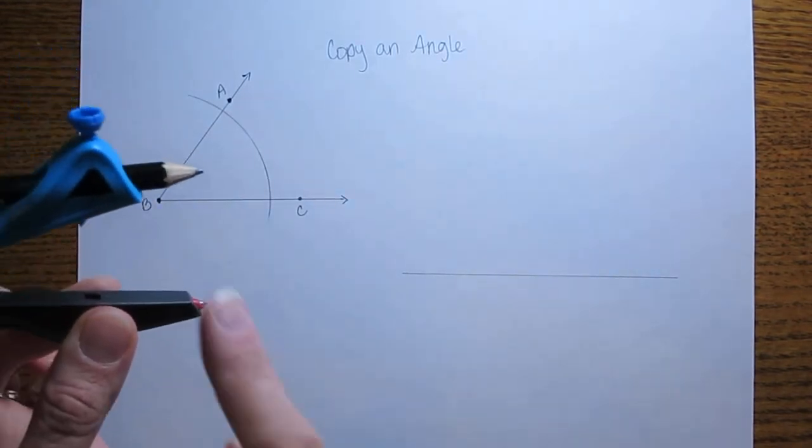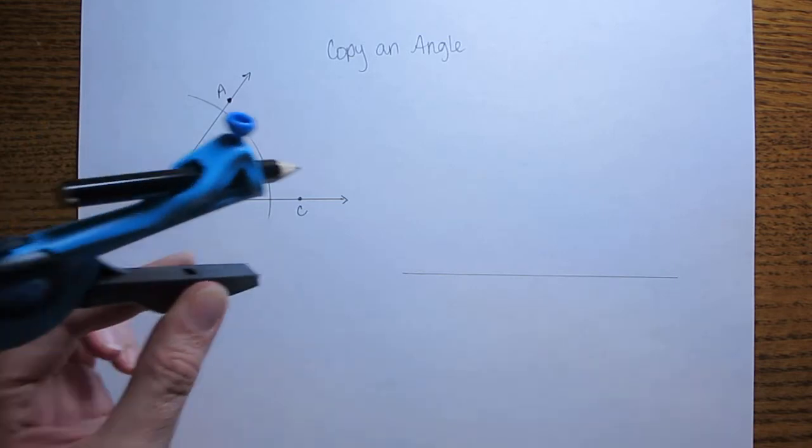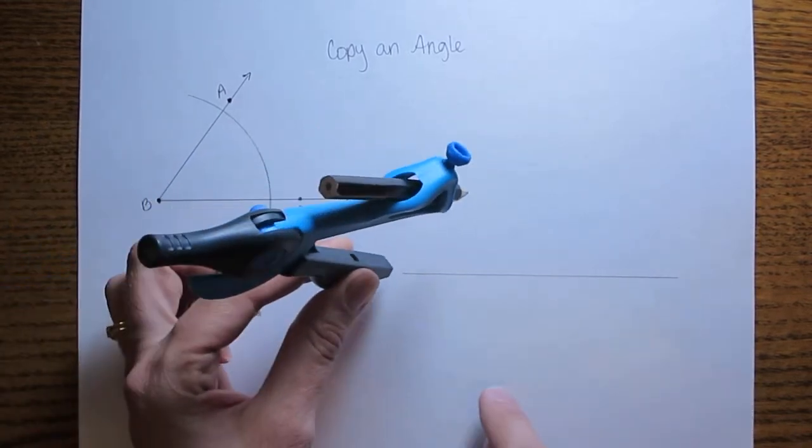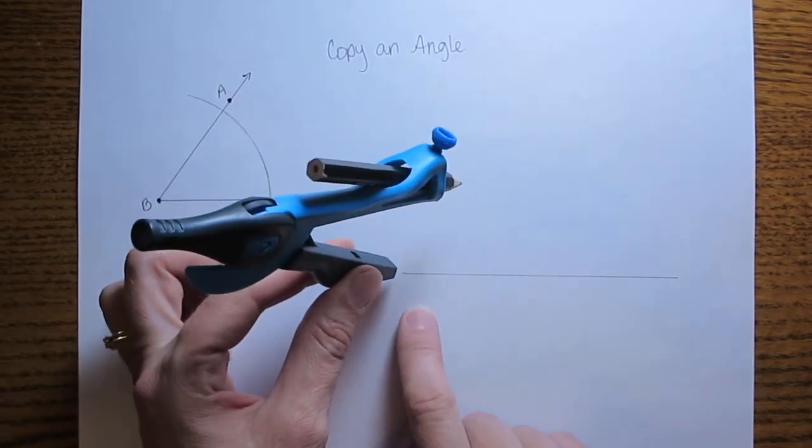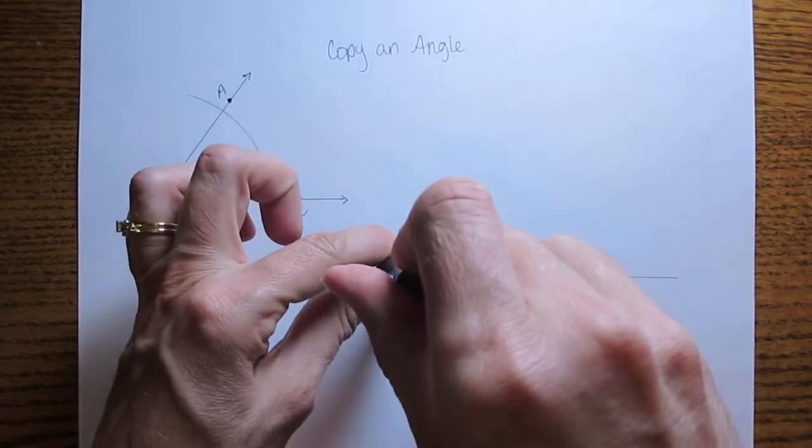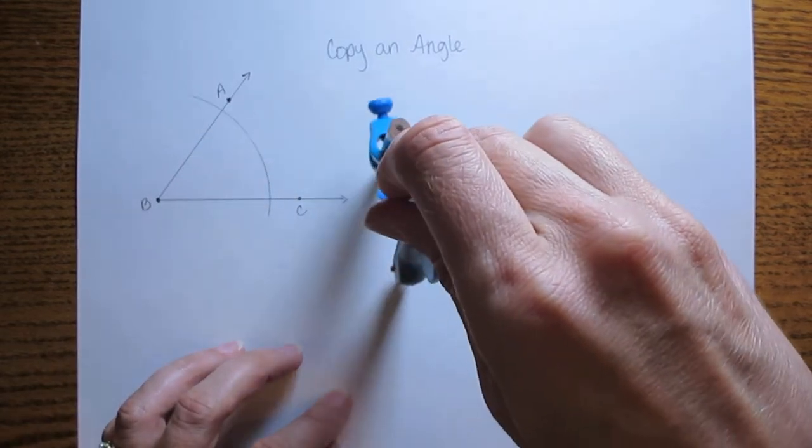And you're going to take the same setting on your compass. Don't change anything. Come over to the new segment. Put the pointed end of your compass at the end point of that segment and make the same arc. You want to make a matching arc.